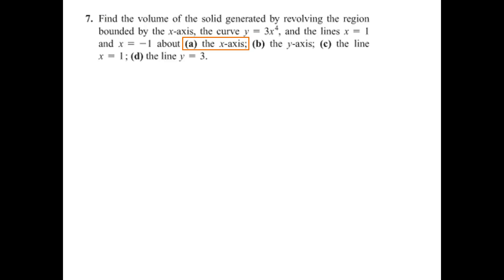This is a problem from the textbook that will hopefully help you understand the different ways to look at the volume of revolution question — disk, washer, or shell. We have four different lines we're going to revolve about, but the region in every one will be the curve y equals 3x to the fourth, between x equals negative 1 and x equals 1, and the x-axis. We have this picture here, and it's going to be revolved first about the x-axis.